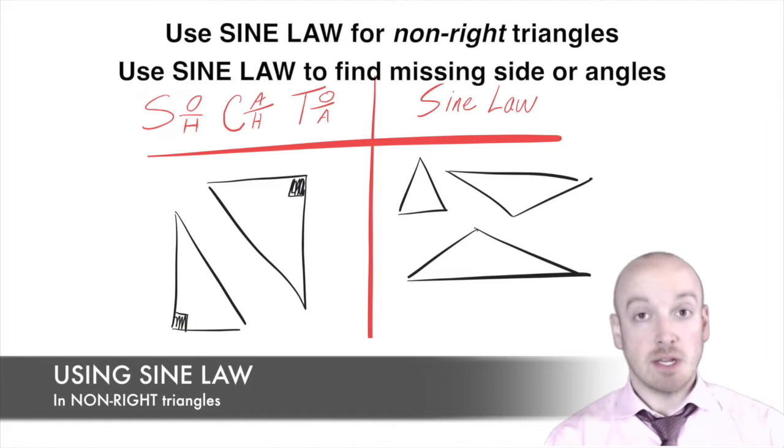And just like in SOH CAH TOA, if you're finding an angle instead of a side length, your last step is always the sine negative one. So sine law is a little different because all we're using is that sine or sine button on the calculator. We're ignoring cos and tan when we're using this formula.